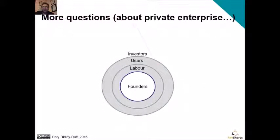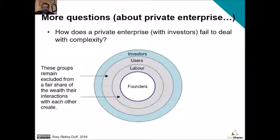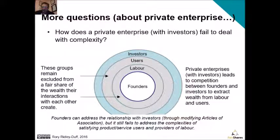Now let's look at a private enterprise that does have investors. How does that fail to deal with complexity? Labour and users are still excluded from a fair share of the wealth that their interactions create. But if you have investors, you're now going to have competition between the founders and the investors to extract wealth from labour and users. Founders can address the relationships with investors by modifying articles of association that accommodate their interests, but it will still fail to address the complexities of satisfying product and service users and providers of labour.